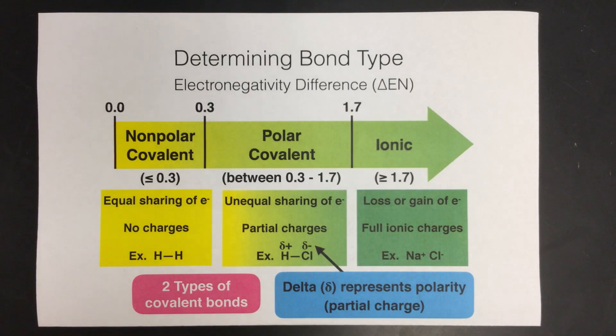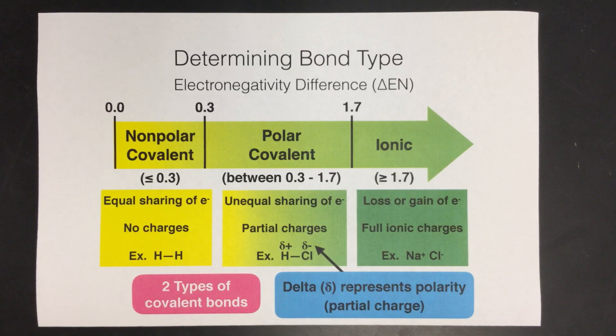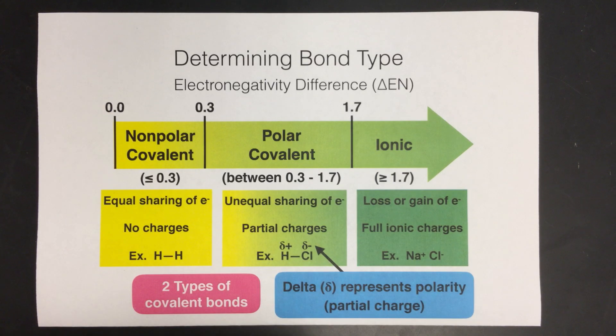Hello, this is a quick tutorial video on how to determine the type of bond that occurs between two atoms using their difference in electronegativities.